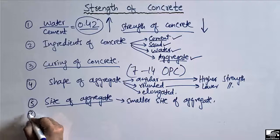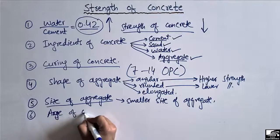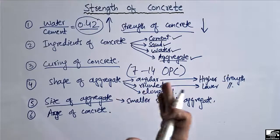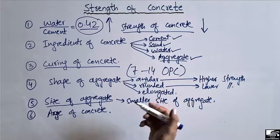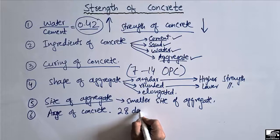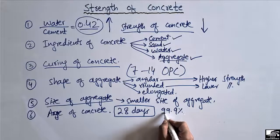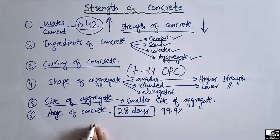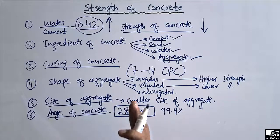The sixth factor that affects the strength of concrete is the age of the concrete. Age of concrete is directly related to hydration. With time, concrete increases in strength. Up to 28 days, concrete achieves its maximum strength — approximately 99.9% — while it can never achieve 100% strength. So age is a factor where concrete achieves maximum strength within 28 days.